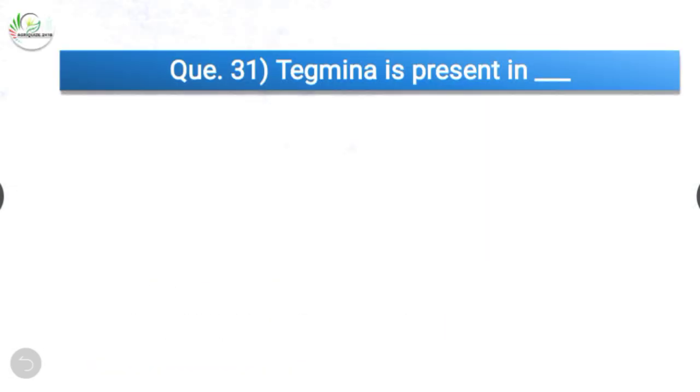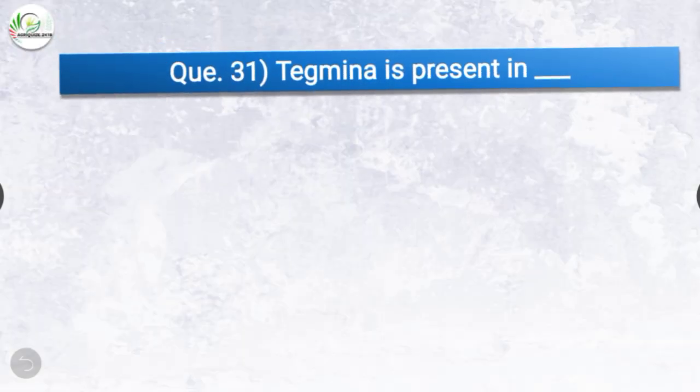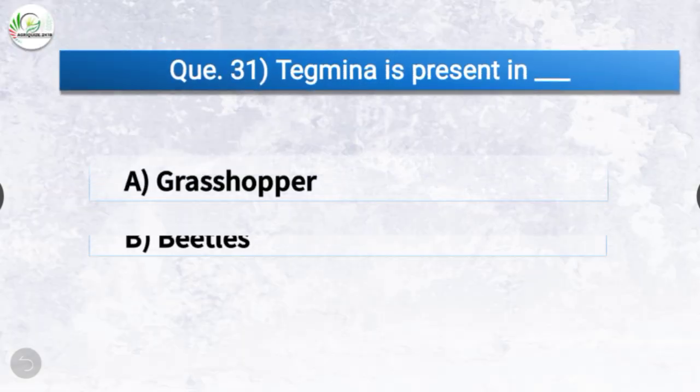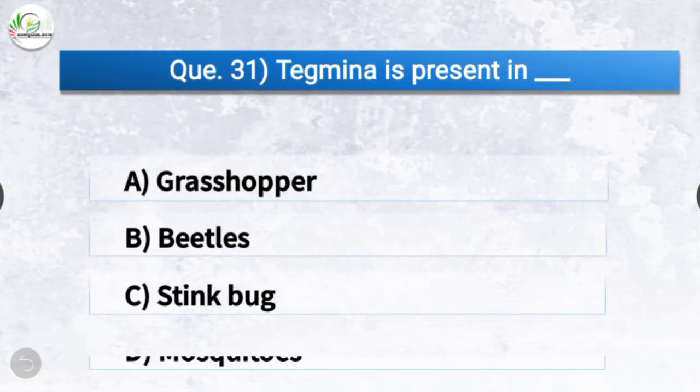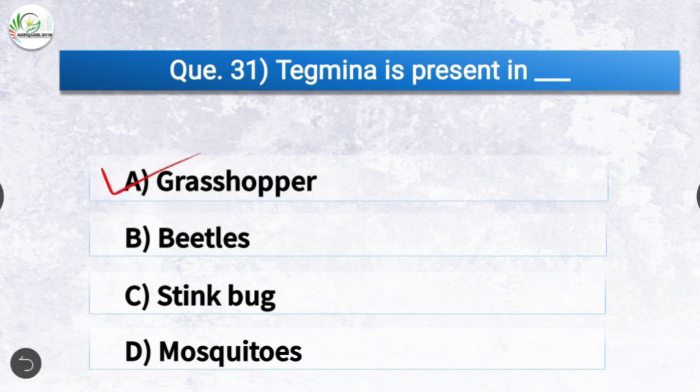Question number thirty-one: Tegmina is present in dash. The options are grasshopper, beetles, stink bug, or mosquitoes. The correct answer is option A, grasshopper — tegmina is present in grasshoppers.